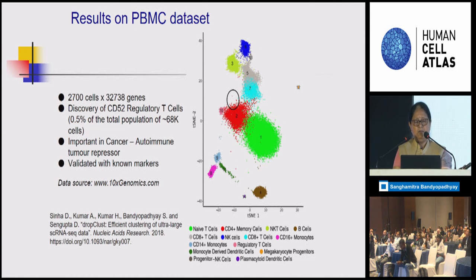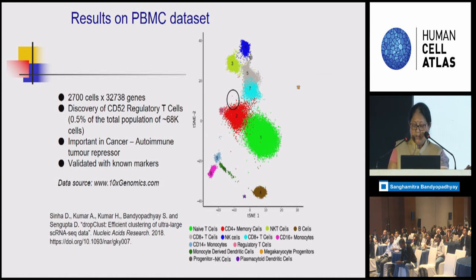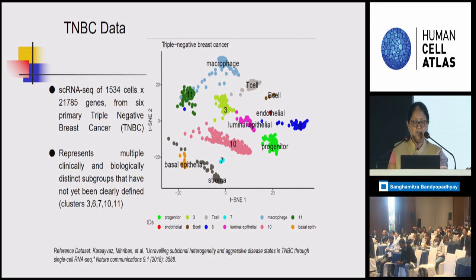Results on the PBMC dataset show that very small clusters can be detected. We were able to discover CD52 regulatory T cells among a very large dataset. We also applied it to triple-negative breast cancer data, obtaining quite interesting results. That is the DropClust and DropClust 2 clustering technique, developed around 2018 to 2020. The DropClust 2.0 web server is available for use.